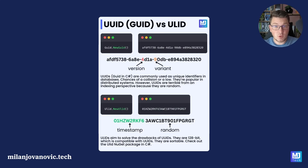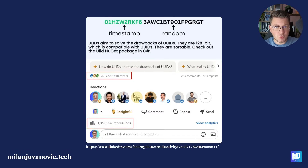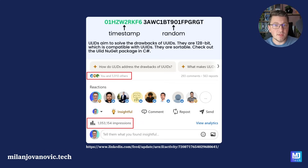I wanted to mention what prompted this video. A few weeks ago I created an infographic and posted it on my usual social media channels: YouTube, LinkedIn, and Twitter, or nowadays it's called X. This particular post got a lot of attention — just on LinkedIn it got more than 1 million impressions, which is pretty viral as far as I'm concerned. The main idea behind this post was to illustrate the difference between UUIDs and a ULID, and highlight the drawbacks of UUIDs when it comes to database performance.